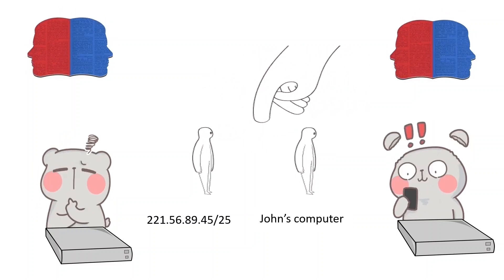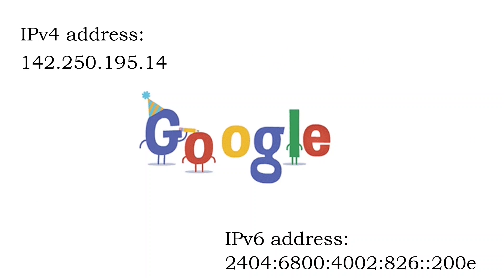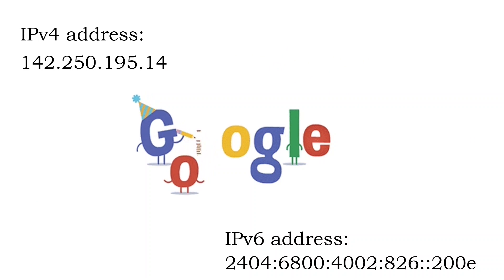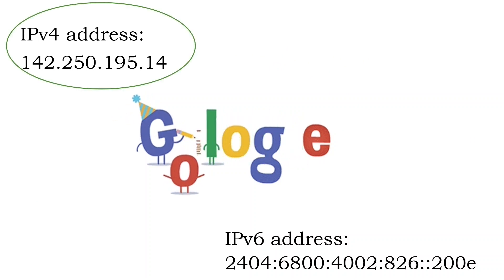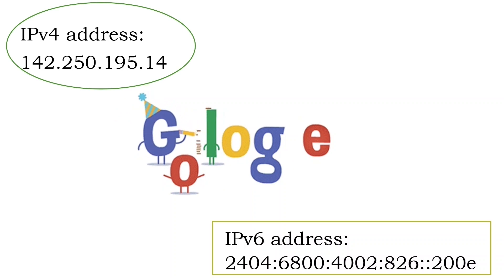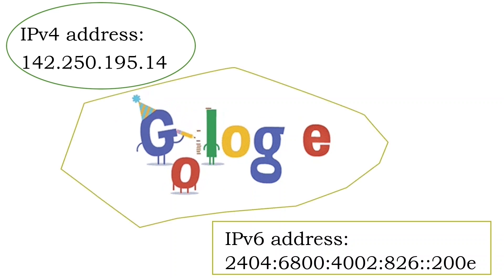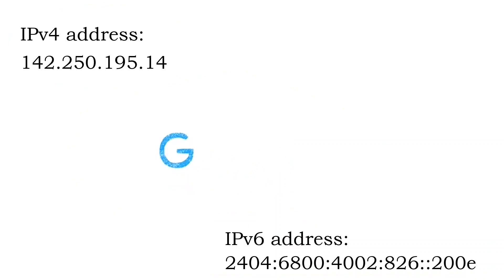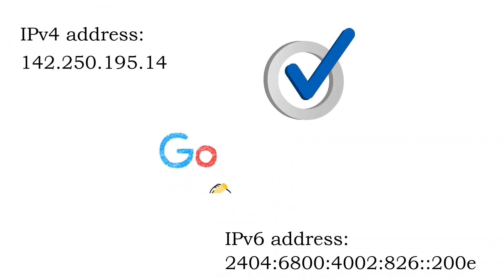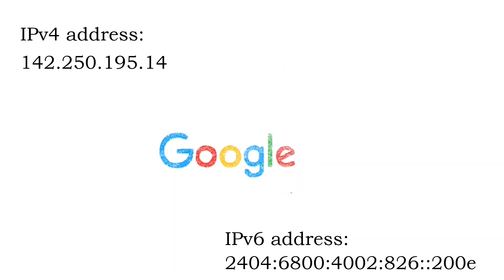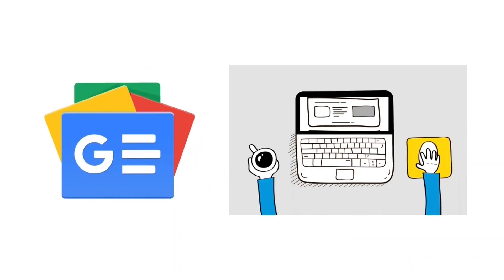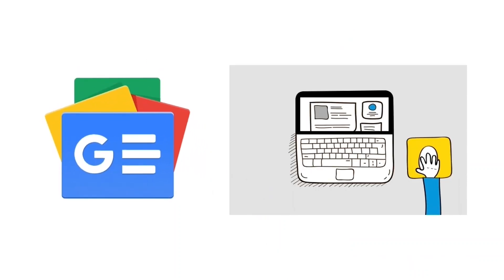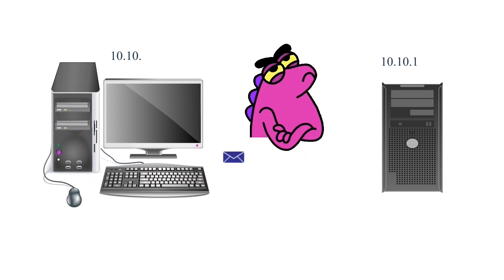Let's take a simple example. Suppose you want to access Google's website. Google's website address is available in three formats: IPv4, IPv6, and name. Which format will you use on the browser to access Google's website? Most of us will use the name rather than the IPv4 and IPv6 formats. It is more convenient and easier to use, speak, and type.